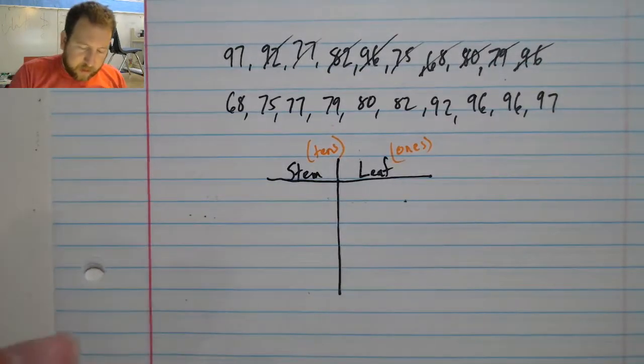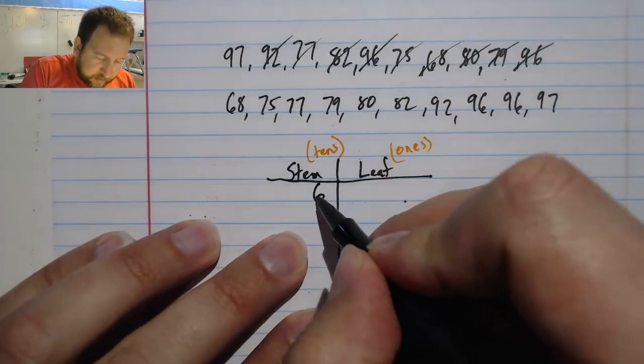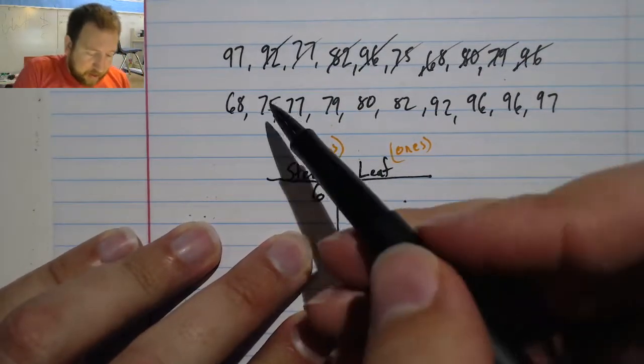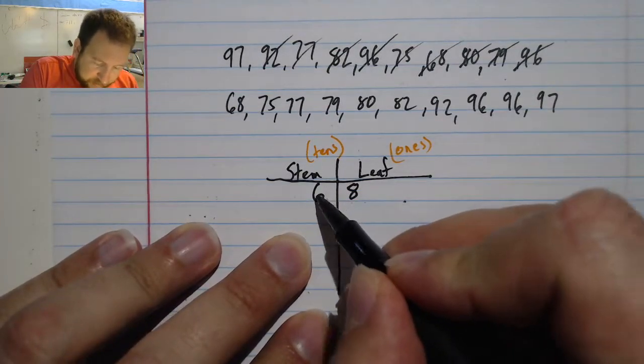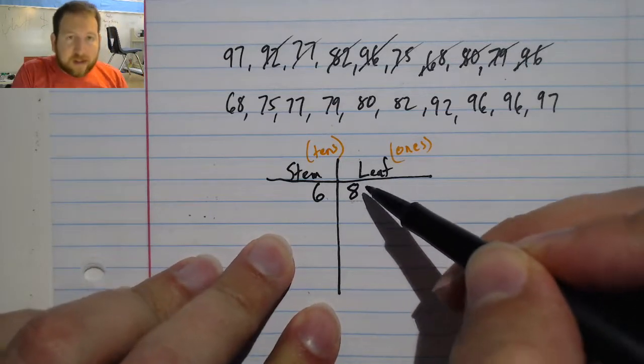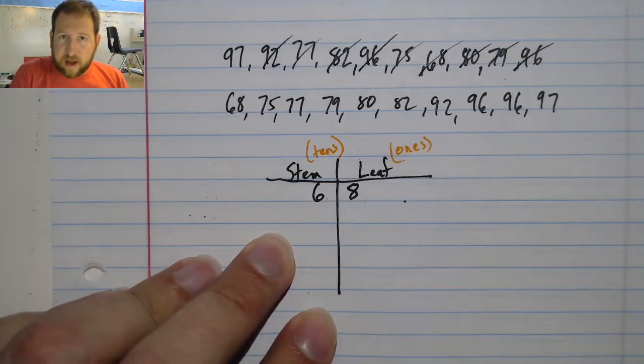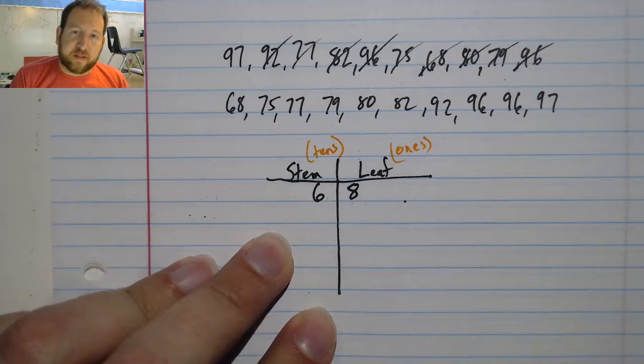And my leaf is going to be my ones. So for example, my 60s, I'm going to put a six over here. And I only have one. So my 68. And I can see that because I only have one leaf on the 60 stem, I only have one term in the 60 column.